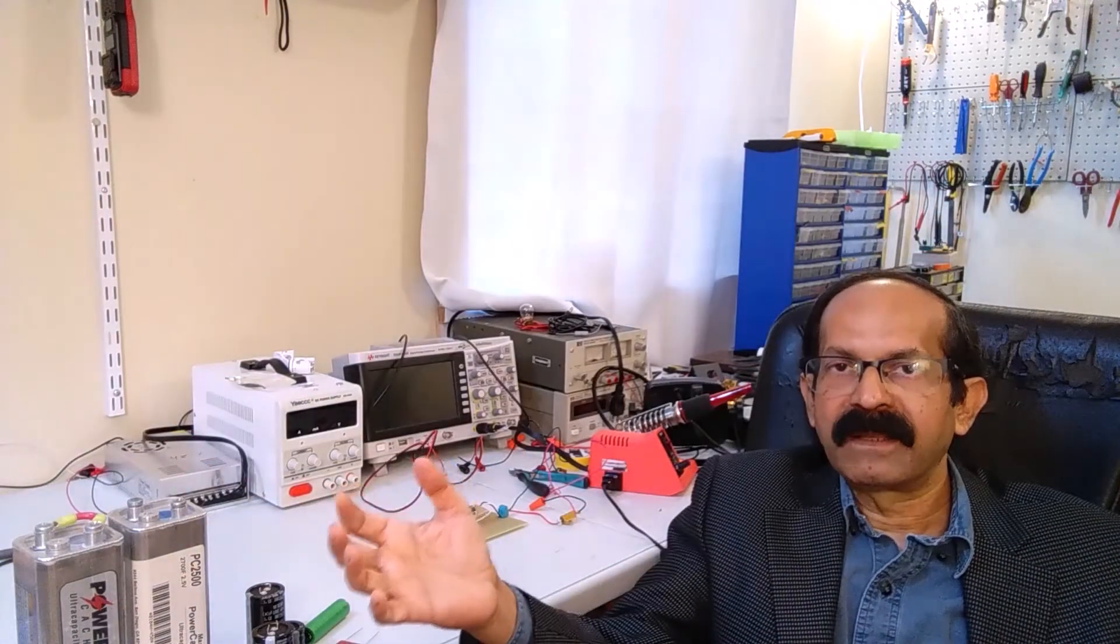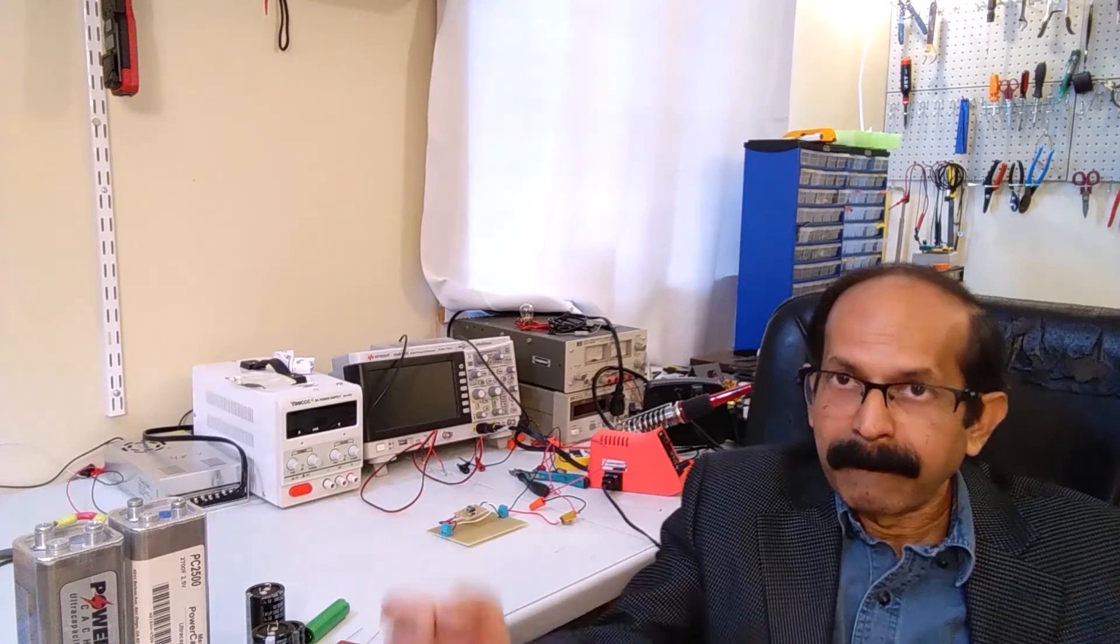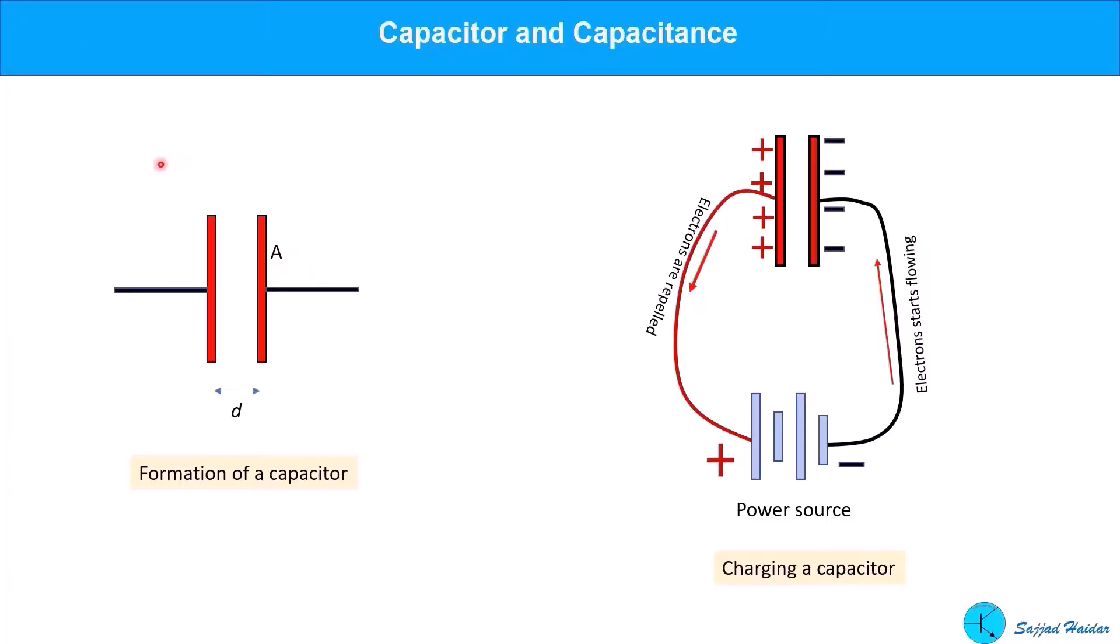Before going into detail how to utilize the power, I will tell a little bit about capacitance and the formation of the capacitor. A capacitor is formed when two metal plates are placed close to each other. If this capacitor is connected to a power source such as a battery, electrons start flowing from the negative side to one of the plates. As the electrons start accumulating on this plate, and as the other plate is closely located, the negatively charged electrons push the electrons out of the second plate, and thus the second plate becomes positively charged.